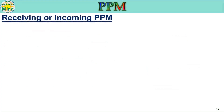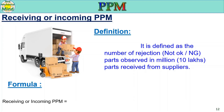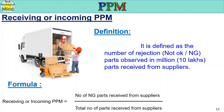Receiving or incoming PPM definition: it is defined as the number of rejection (not-okay or not-good) parts observed in 1 million (10 lakh) parts received from a supplier. The formula is: Receiving/Incoming PPM = (Number of NG parts received from suppliers ÷ Total number of parts received from suppliers) × 10 lakhs.